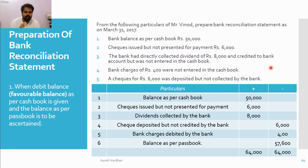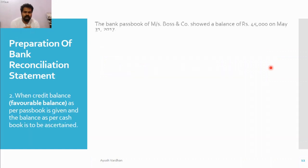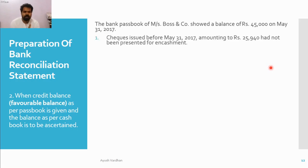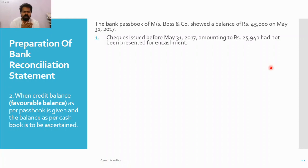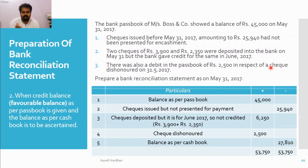Now we move to the second example — favorable condition but starting with the pass book. The first entry shows a balance of 45,000 rupees on 31st May 2017. So the deadline is 31st May and the bank pass book of MS Bose and Co. shows 45,000 rupees. This will come into the positive side. Since we have started with the pass book, our target is now the cash book.